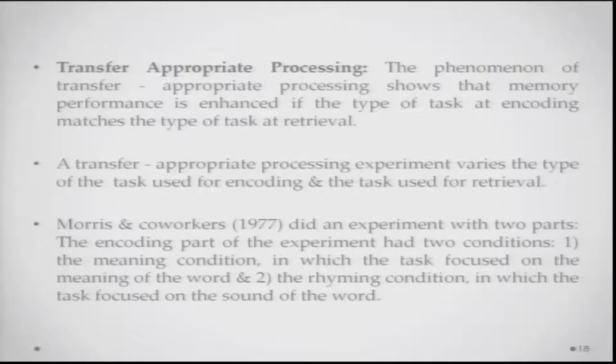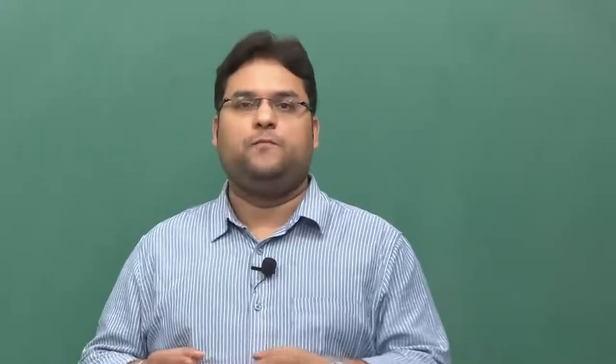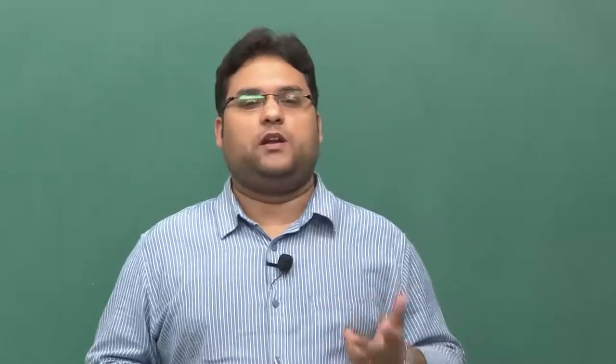Another related concept is transfer-appropriate processing — memory performance is enhanced when the type of task at encoding matches the type of task at retrieval. Morris and co-workers in 1977 did an experiment with two encoding conditions: a meaning condition, where participants focused on the meaning of a word, and a rhyming condition, where they focused on the sound of the word.